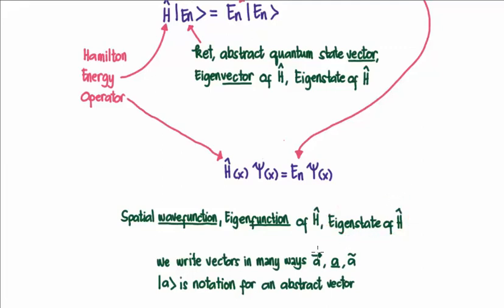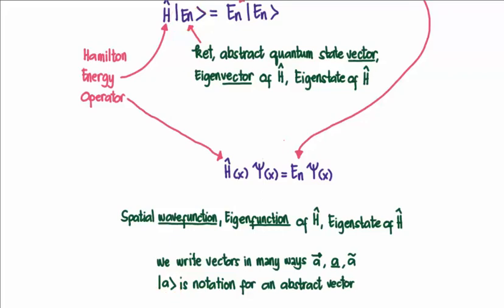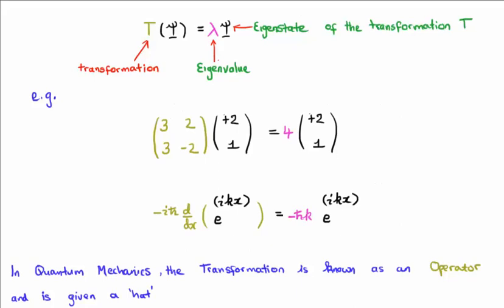Of course we can write vectors in many ways — with an arrow over the letter, a line underneath, or a squiggly superscript. This quantum notation for an abstract vector is known as Dirac notation, and this is known as a ket — so this would be the ket A, and here we have the ket E sub n. See my video on Dirac notation for more. Thanks for watching — please share it with your friends, subscribe to my channel, and you can also visit universityphysicstutorials.com. Happy studies!